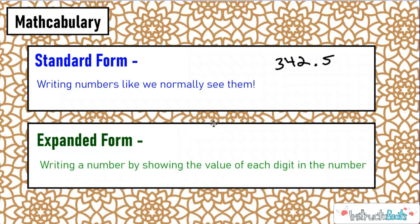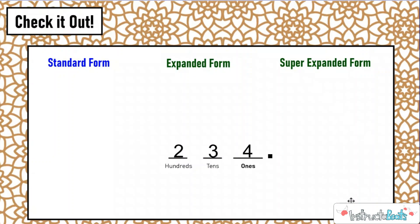Expanded form is when we write a number by showing the value of each digit in the number. Going back to our previous lesson, writing what each digit is contributing to the overall value of the number. So check it out right here. Here we have our place value chart. I'm going to make this a little bit more complicated than I need to because it's very easy, but I really want you to think about why it works first, and then you can obviously do the shortcut too.